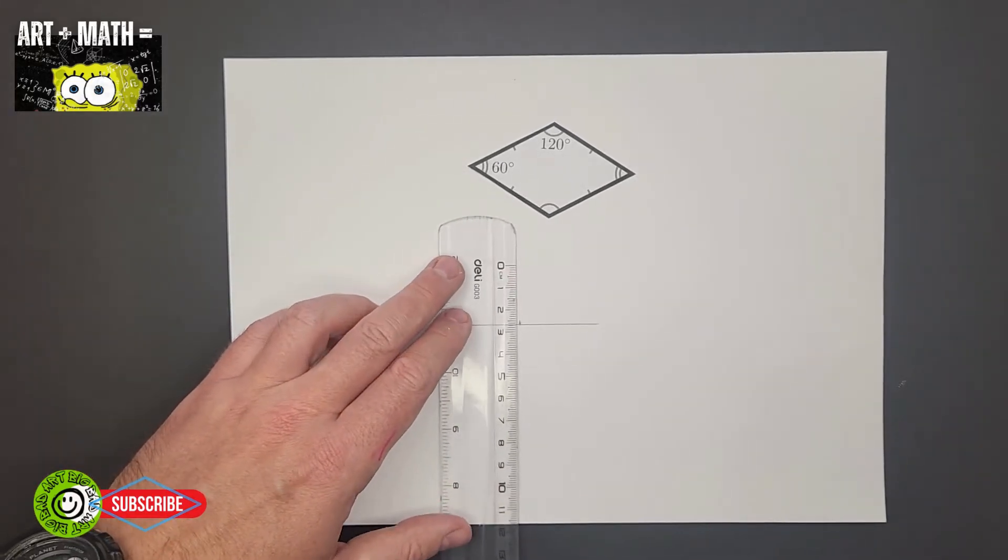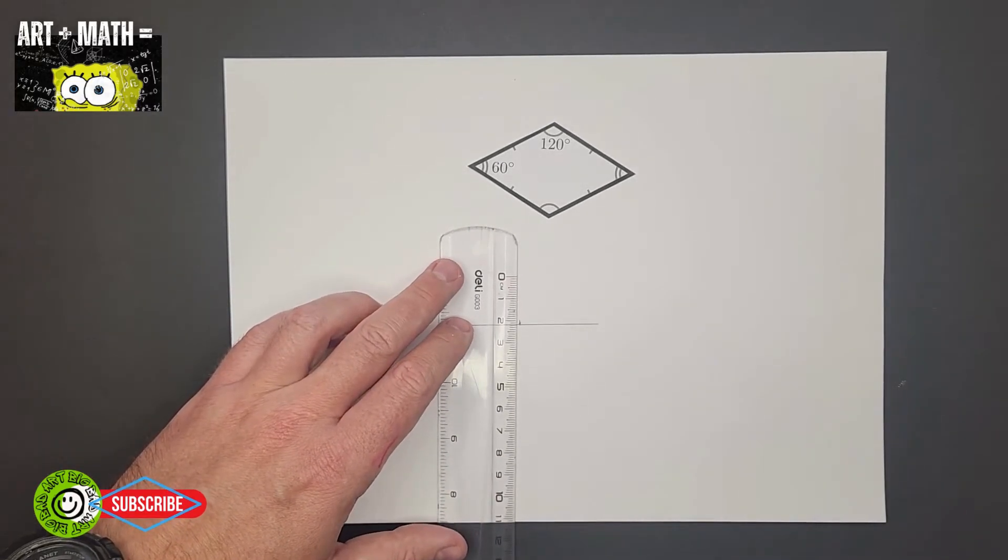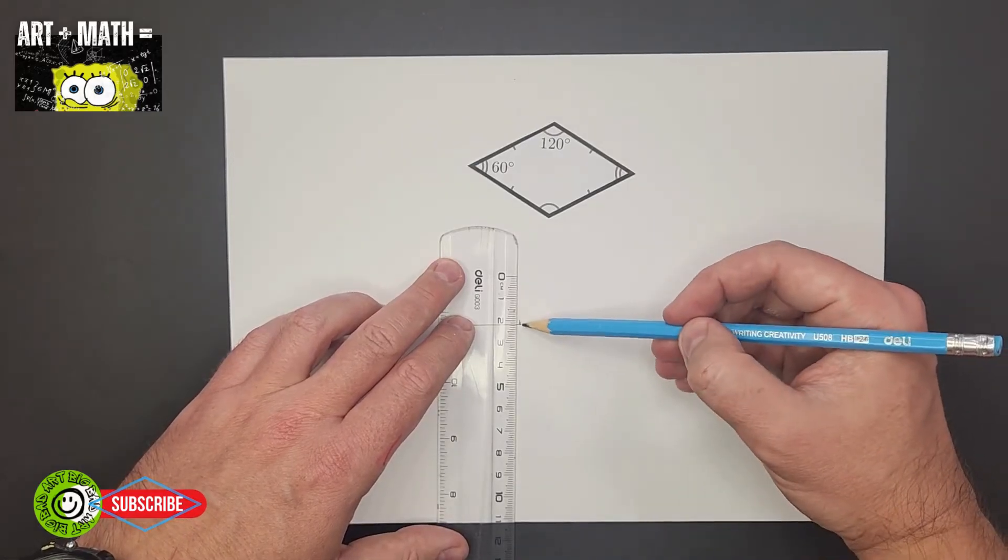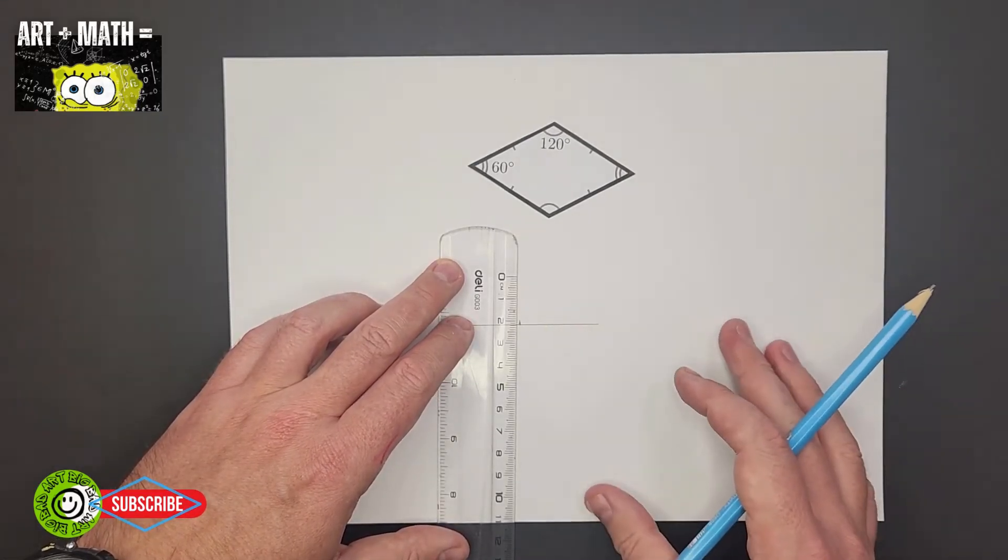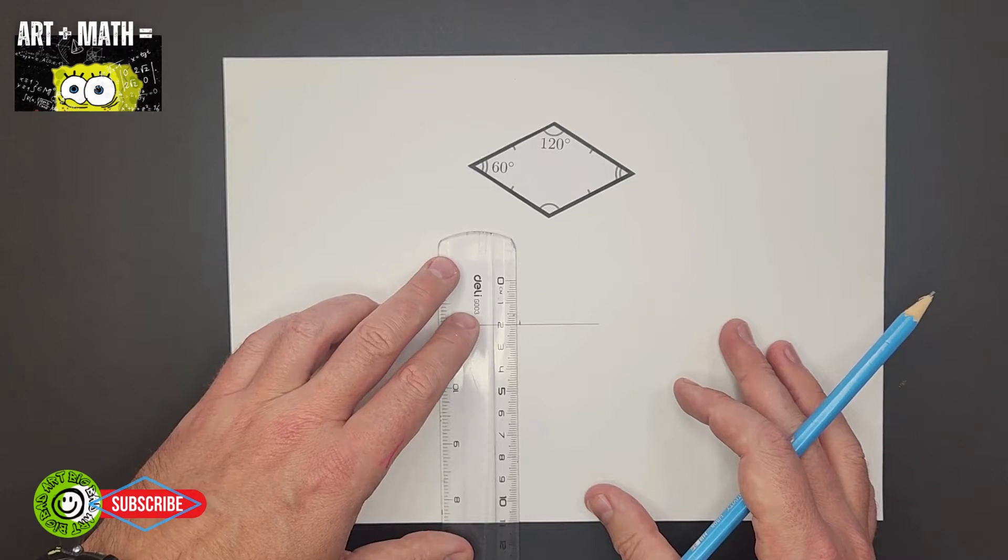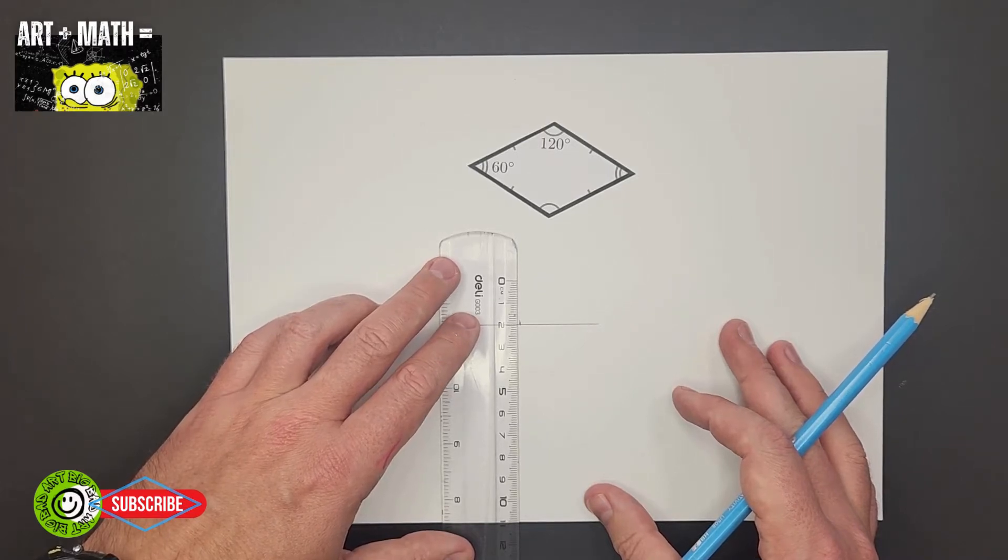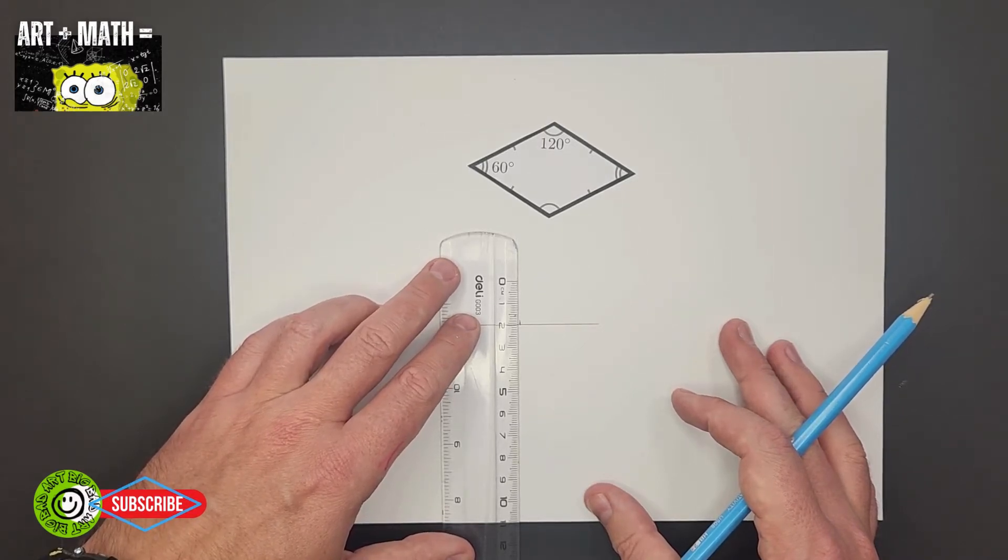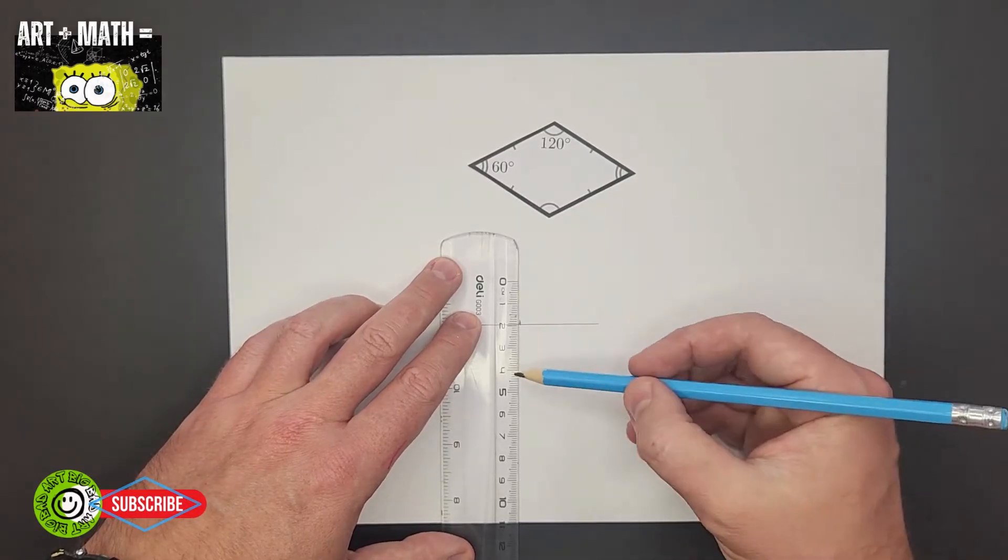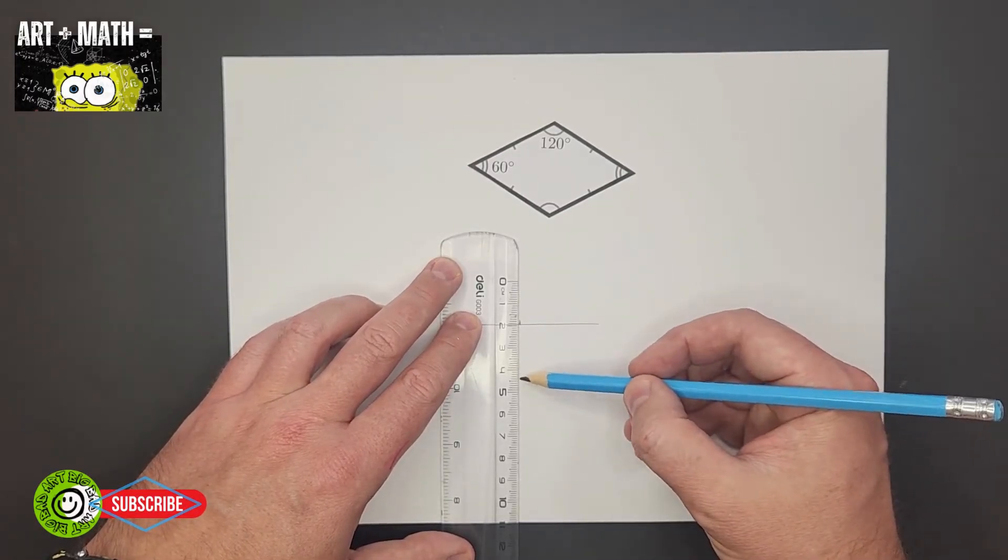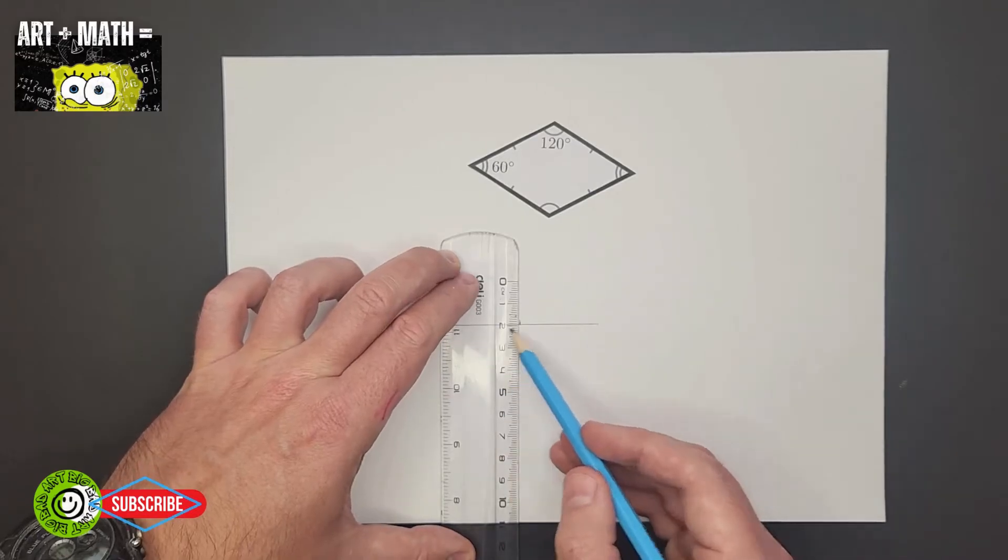Okay, then turn your ruler and this time line it up with the mark that you made. Make sure that your ruler is straight, okay. And we need to draw a line which is four centimeters, okay. But the middle of the first line has to be in the middle of the new line, like a cross.